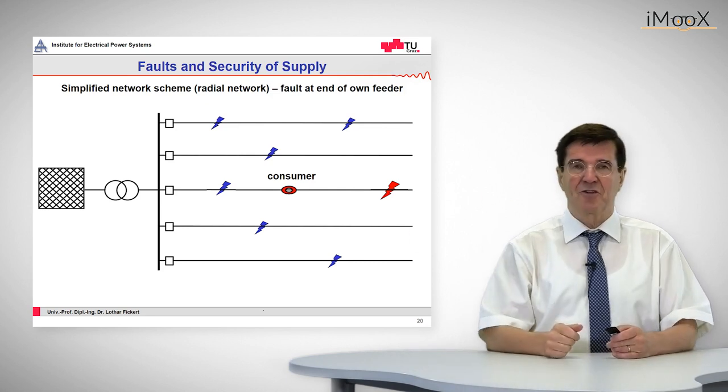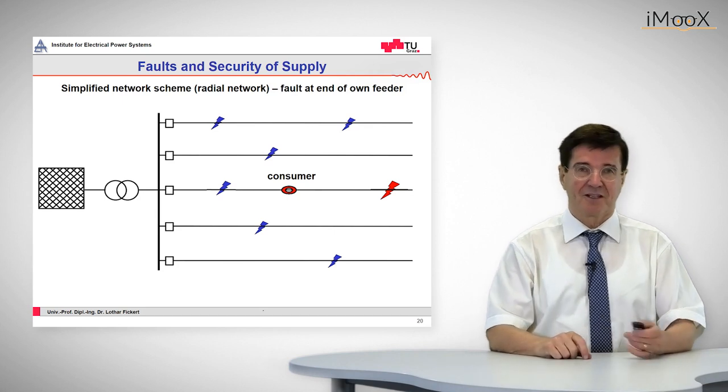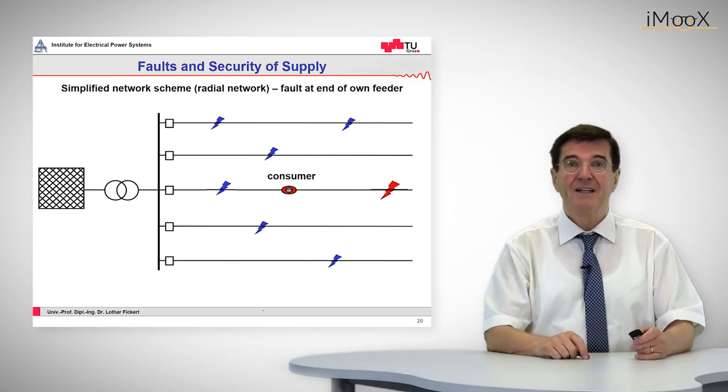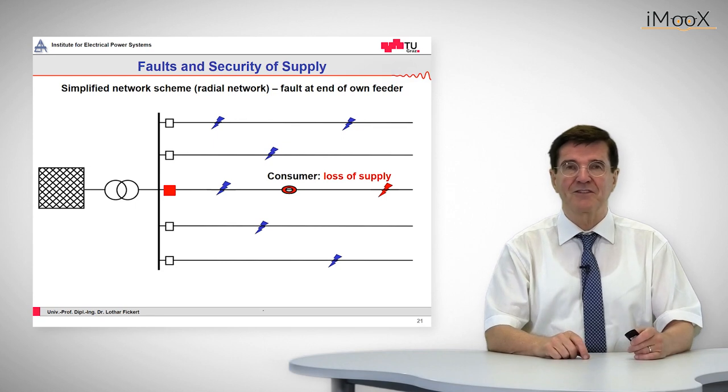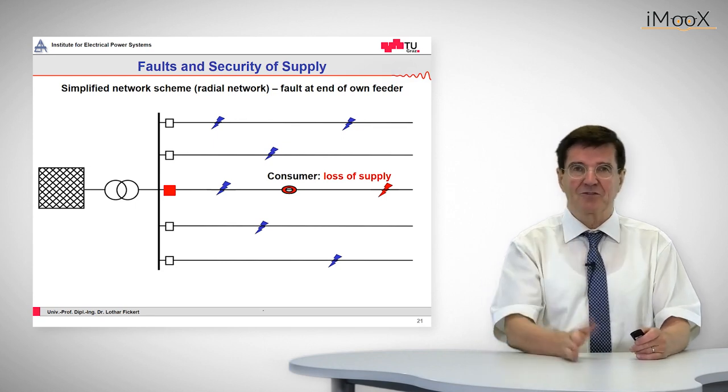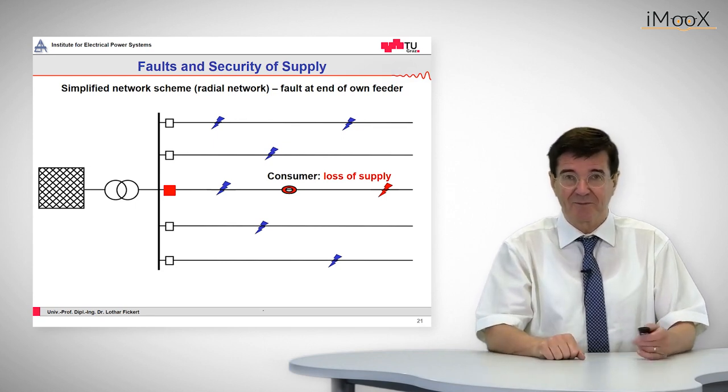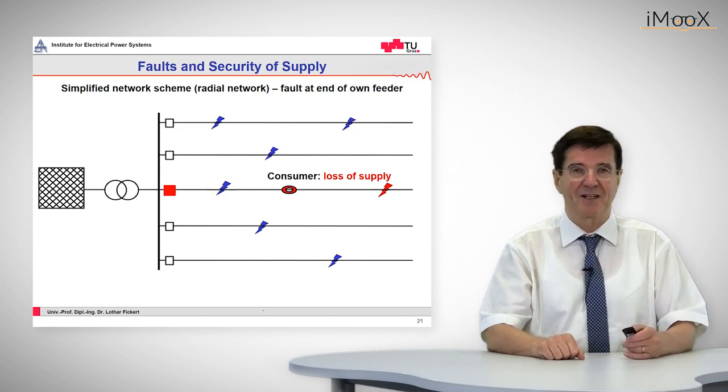The fault has just occurred. You can see the color of the error has changed to red. Now the protection of this feeder will detect it and trip out the feeder of the consumer. That means the consumer experiences a loss of supply.